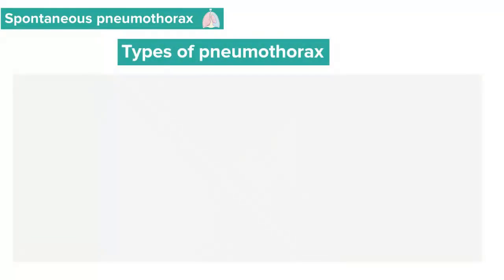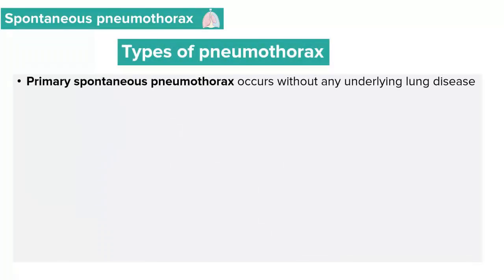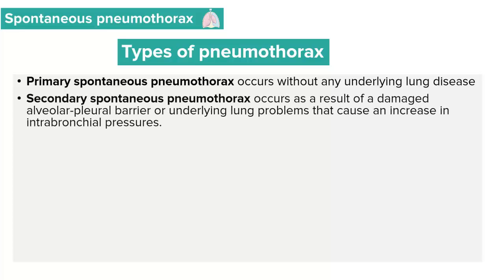Primary spontaneous pneumothorax is a type of pneumothorax that occurs without any underlying lung disease. Secondary spontaneous pneumothorax is a type of pneumothorax which occurs as a result of an underlying lung pathology. In these cases, there is a damaged alveolar-pleural barrier.